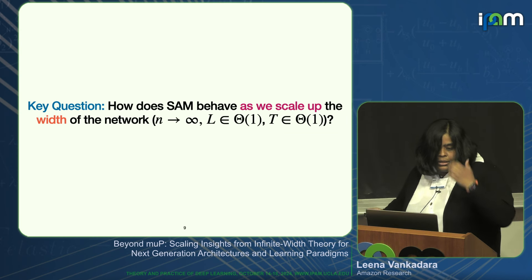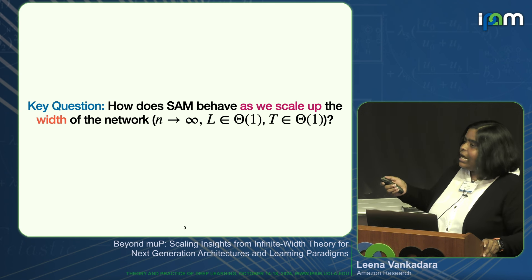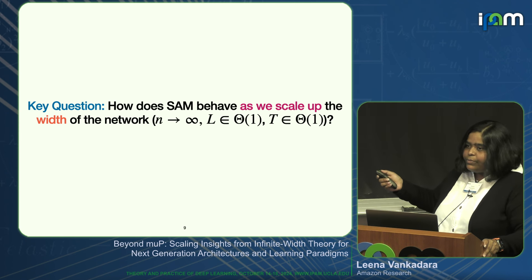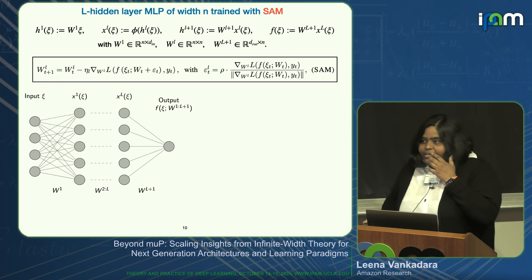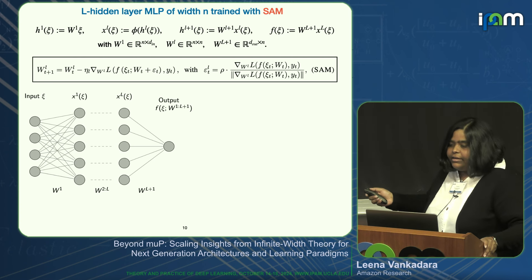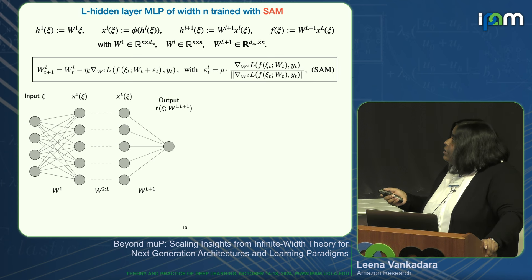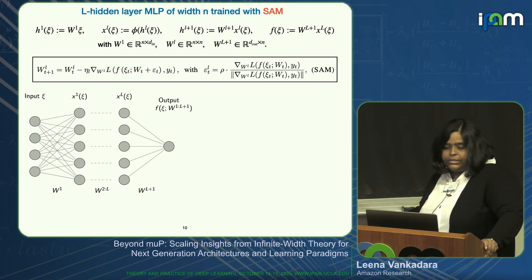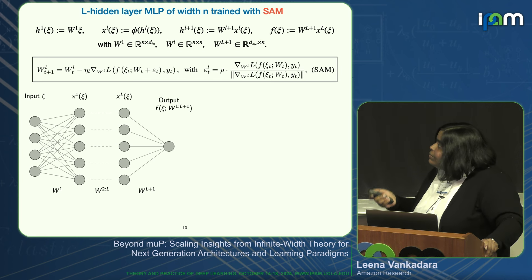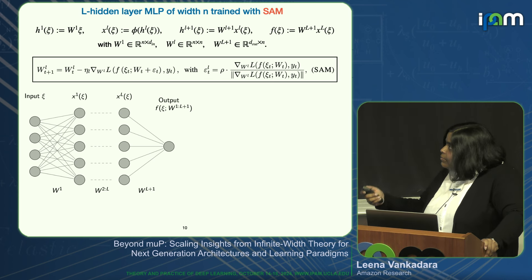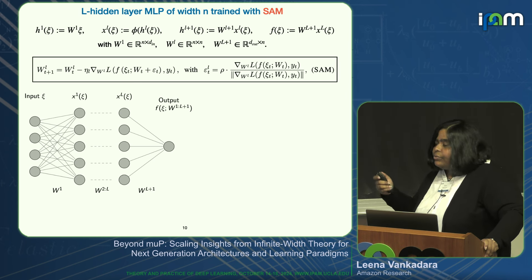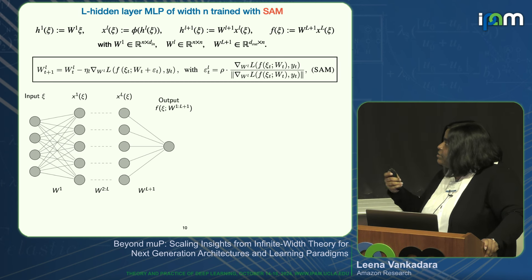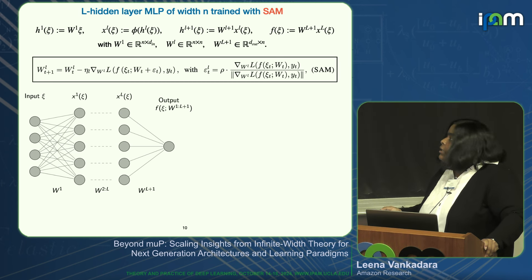The key question we're interested in is: how does SAM behave as you scale up the width of the network, holding everything else constant—depth, data size? We start with an L-hidden-layer MLP of width N trained with SAM. The standard iterative computation uses H for pre-activations, X for activations, F for function output, and W for weights. To understand SAM's scaling behavior, we start from some scaling rule. Typical scaling rules for SGD parameterize the learning rate and initialization variance.